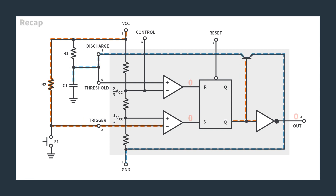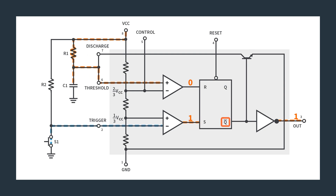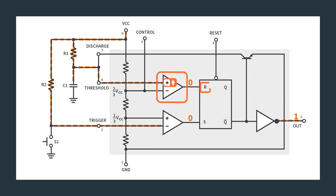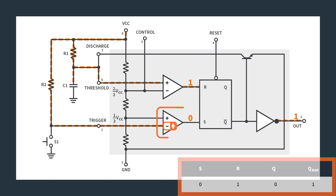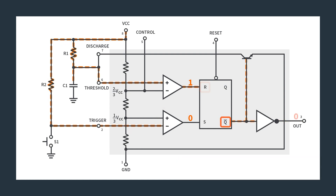Looking at the upper comparator, we are waiting for the capacitor voltage to hit two-thirds VCC compared to the voltage divider at the inverting input. When it hits two-thirds VCC, that comparator flips, providing R a high voltage, which inverts the flip-flop output. So when you push the button, you drop the inverting input voltage, making S one, Q-bar zero, opening the switch, and the capacitor charges through R1. The time it takes C1 to charge to two-thirds VCC via R1 is the amount of time the output remains high.